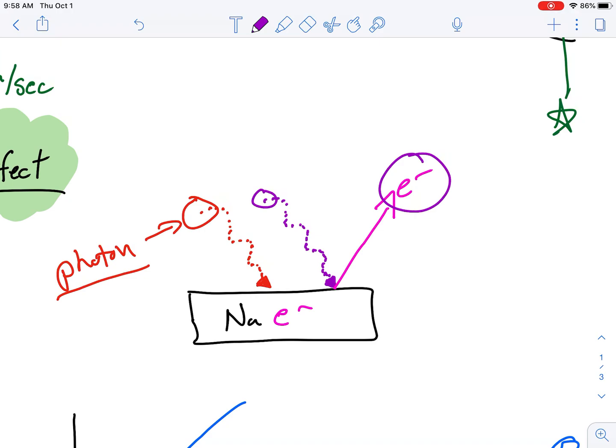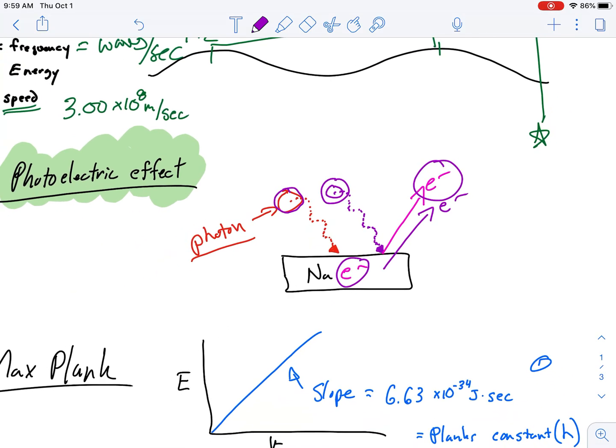A great way to understand this is thinking about whether or not a baby punches you in the face or Mike Tyson punches you in the face. If a baby punches you in the face, that'd be like a red photon. It doesn't have a lot of energy. You're not going to lose a tooth or an electron. If Mike Tyson punches you in the face, that photon has a lot of energy. You're going to lose that tooth. It's going to be emitted. That's the photoelectric effect.